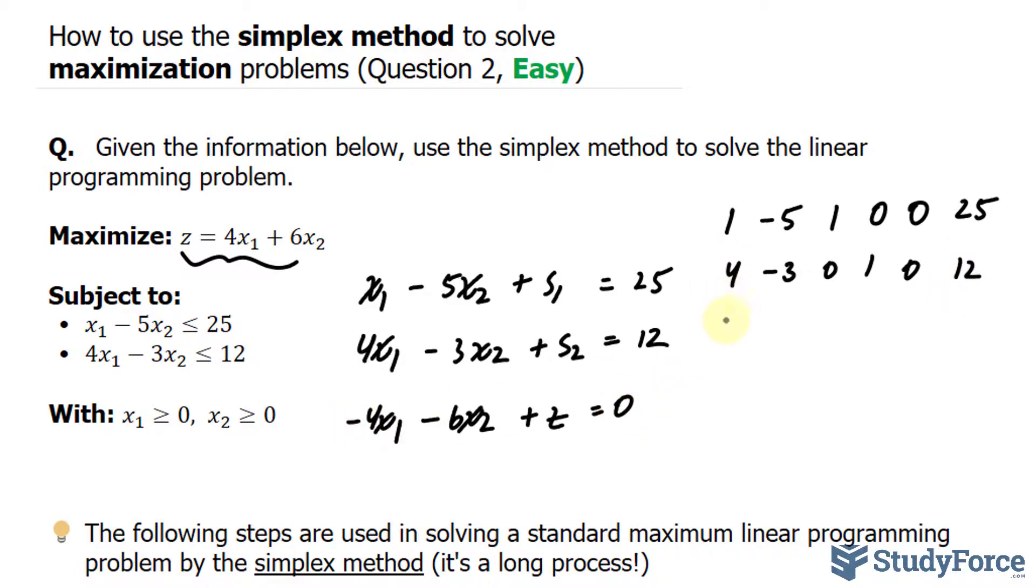In addition, this becomes 4 minus 3, 0 because there's no s sub 1 here. But there is an s sub 2, so we'll put a 1 underneath this column. No z, 12. And finally, over here, we write down negative 4, negative 6, 0, 0, and 1. And the constant here is 0.